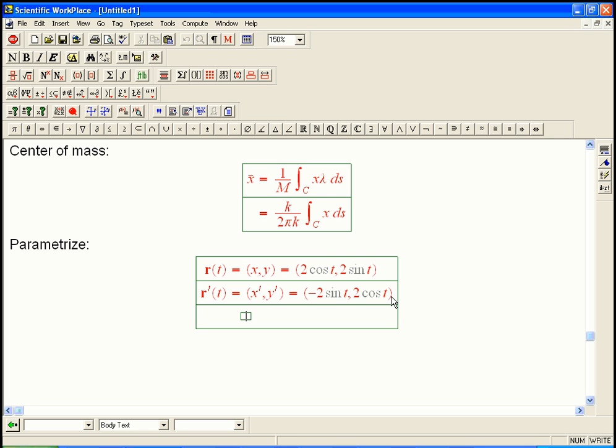And we really just need, for a vector line integral, we'd need the whole vector, but we really just need speed. And that's going to be the magnitude of that guy. And that's the sine squared plus cosine squared just cancels out. We just get 2. Speed 2. That's always equal to the radius for this kind of parameterization of a circle.